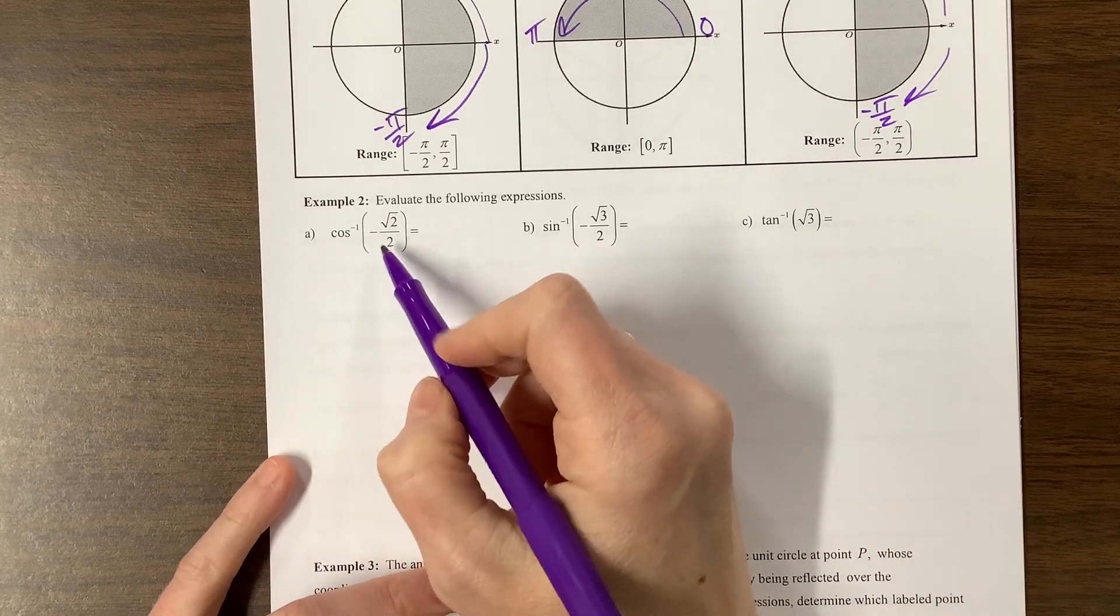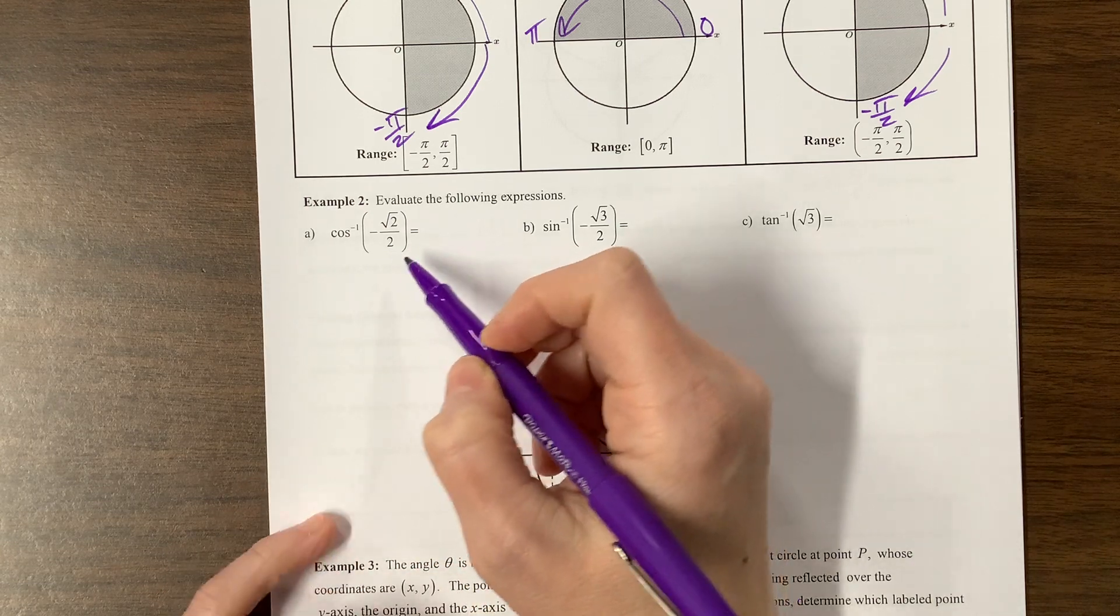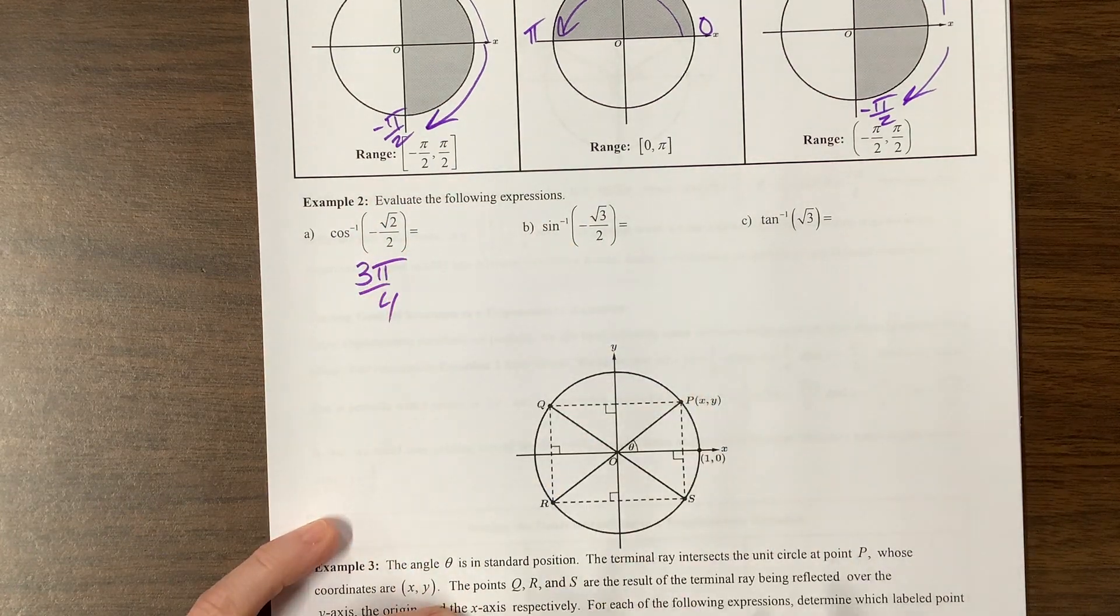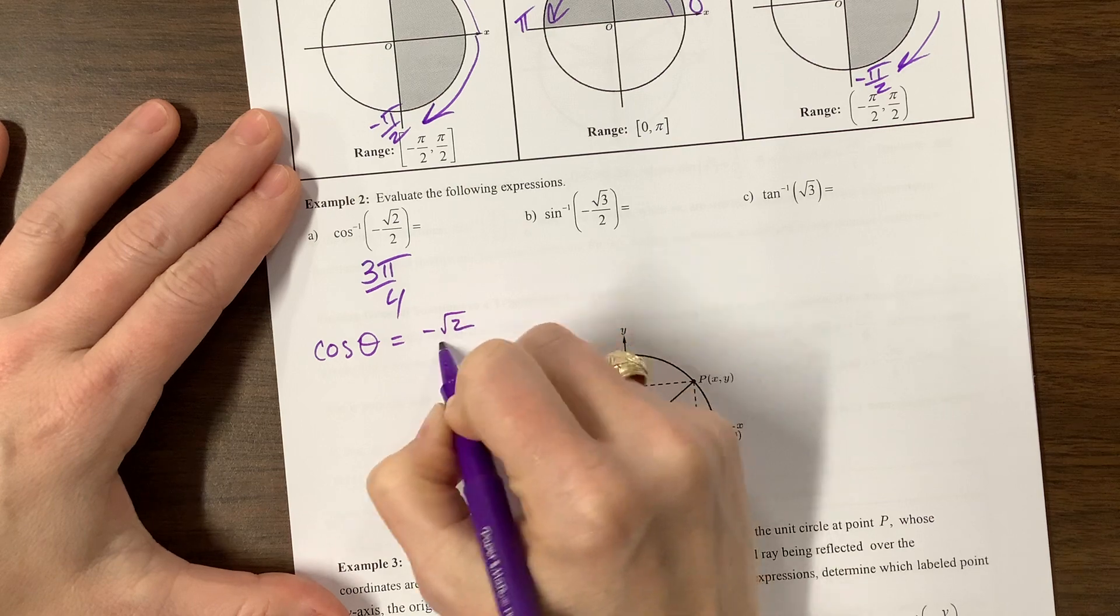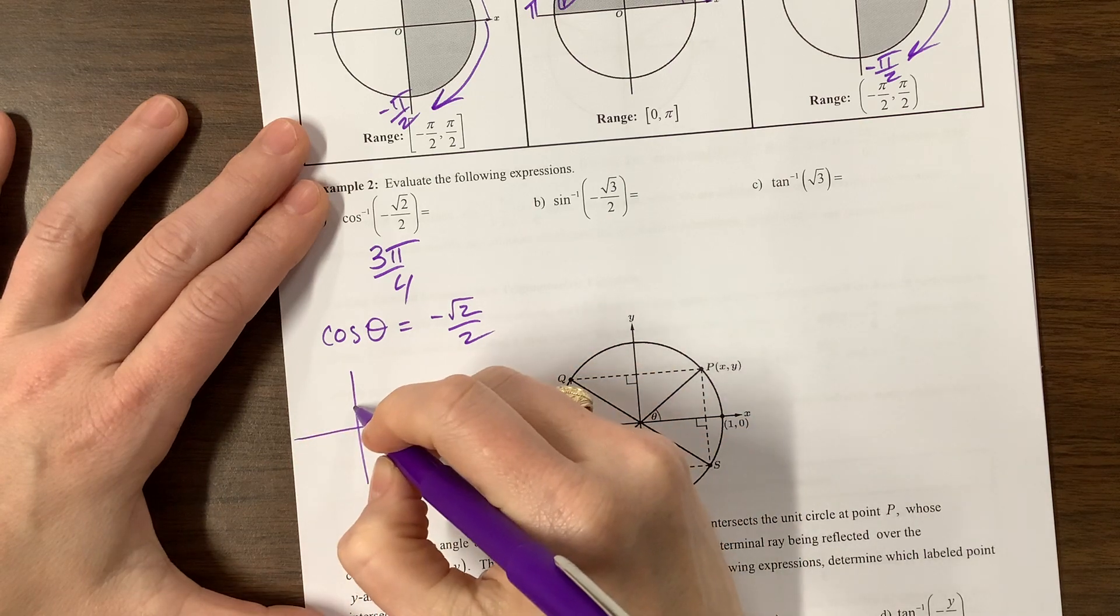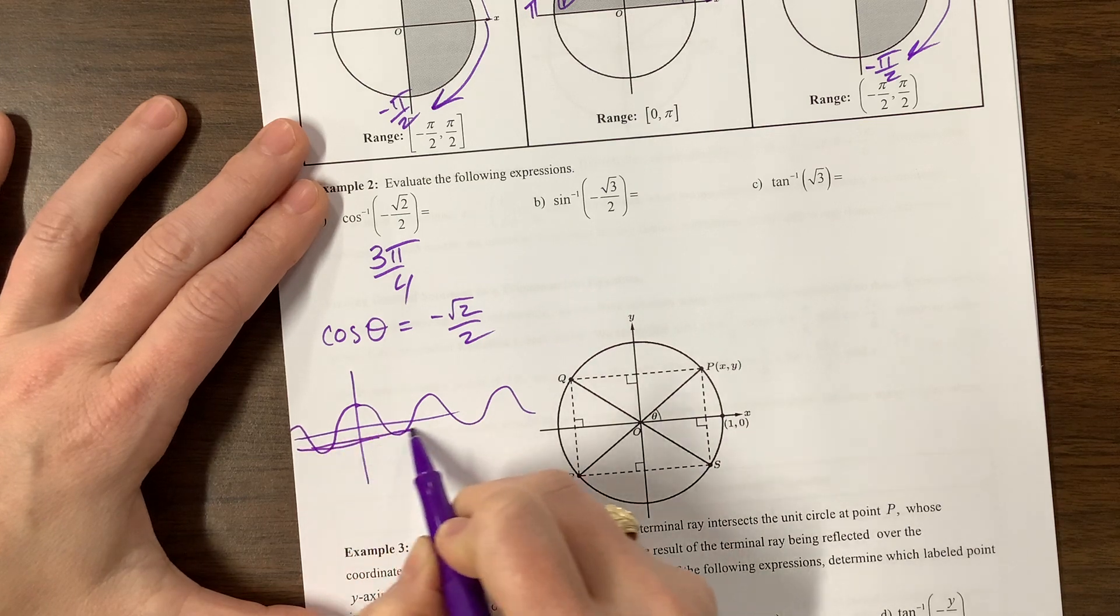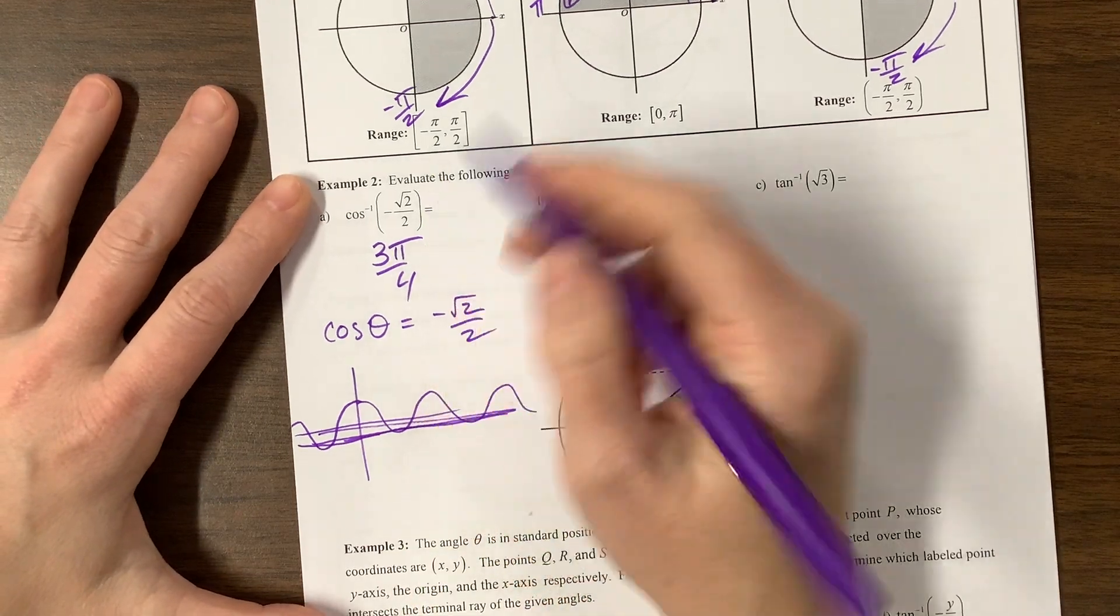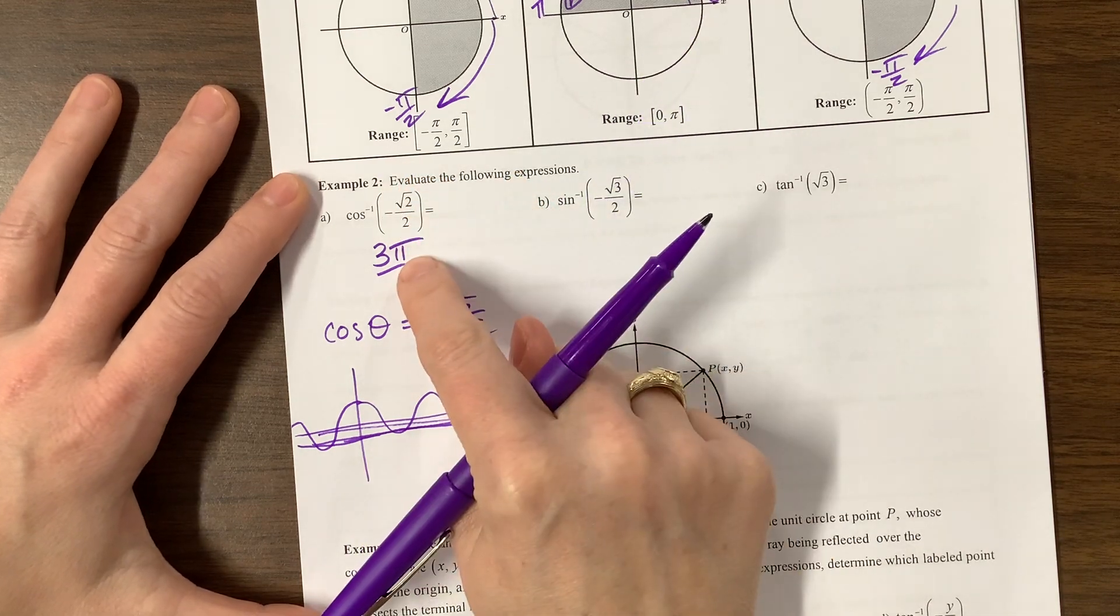So inverse cosine of negative root 2 over 2. As soon as I see root 2 over 2, I know it's the pi over 4 family for sine and cosine. Negative puts me in quadrant 2 with cosine. And so this is 3 pi over 4. And that is the only answer. So we may talk about this later. If I had said cosine of theta equals negative root 2 over 2, there are actually infinitely many answers to this. Because if you think about it, cosine starts here and kind of goes forever and ever, and it'll hit that line infinitely many times. This is something different. This is saying the inverse cosine function, I'm plugging in one particular x value, and I get one particular y value.